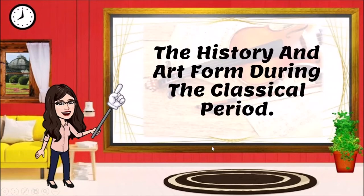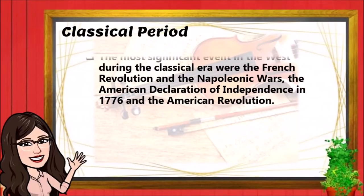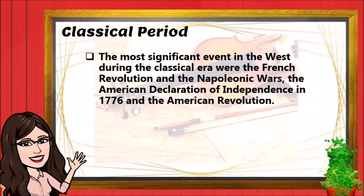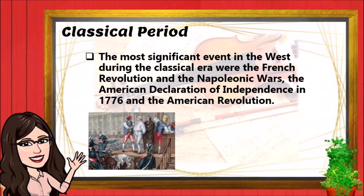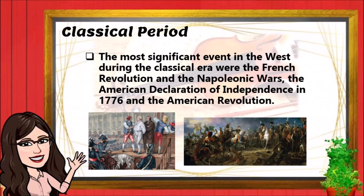The History and Art Forms During the Classical Period. The most significant events in the West during the Classical Era were the French Revolution and the Napoleonic Wars, the American Declaration of Independence in 1776, and the American Revolution.